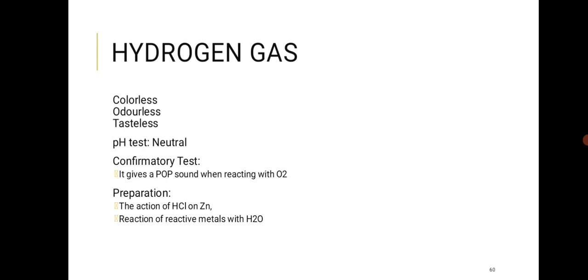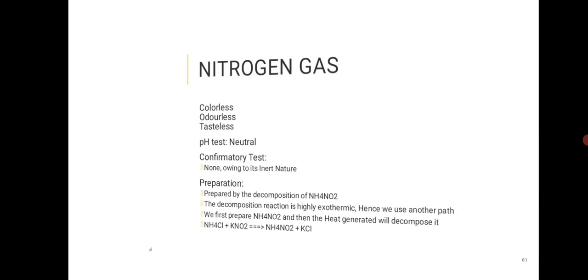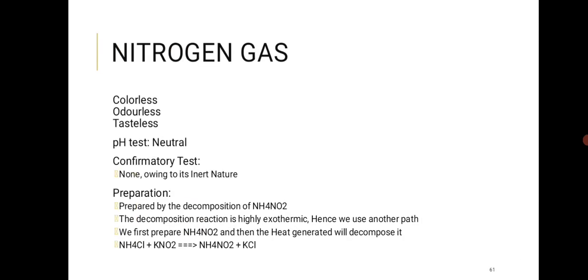Hydrogen gas (H2) is colorless, odorless, and tasteless; it is neutral — don't be misled by the H into thinking it's acidic. Confirmatory test: it gives a 'pop' sound when ignited with oxygen. Preparation: the action of HCl on zinc, or the reaction of active metals with water/acids — for example, potassium reacting with water produces potassium hydroxide and hydrogen gas.